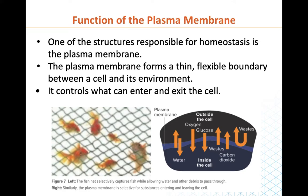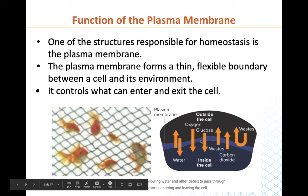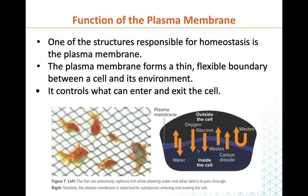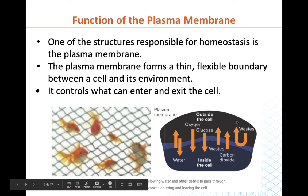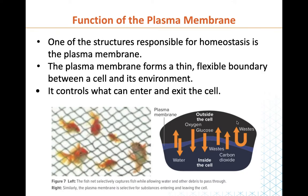One of the structures responsible for homeostasis is the plasma membrane. The plasma membrane has a property called selective permeability. It forms a thin, flexible boundary between a cell and its environment and controls what can enter and what can leave. For example, oxygen and glucose and all the good stuff can come into our cells in controlled amounts, while waste is supposed to not be able to enter. If there's a lot of waste in the environment outside my cell, I would need a way to stop that waste from entering. How this works is basically like a fishnet — some things can enter, some things can leave.